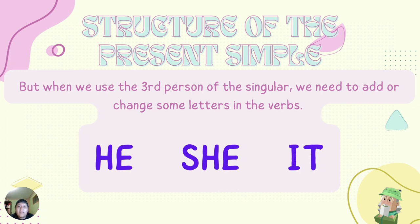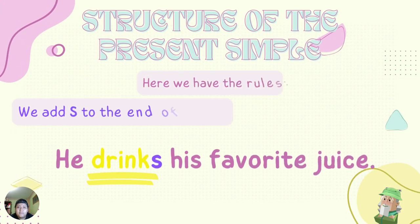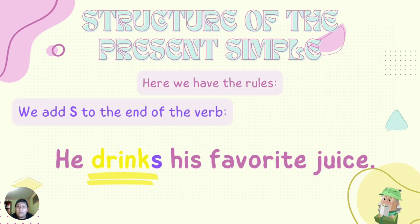But when we use the third person of the singular — he, she, it — we need to add or change some letters in the verbs. We add S to the end of the verb. For example, he drinks his favorite juice — the base form is 'drink,' but in the third person we add S: 'drinks.'